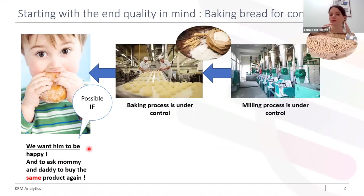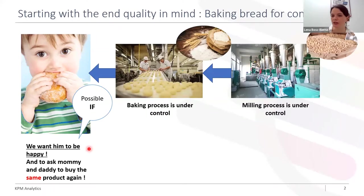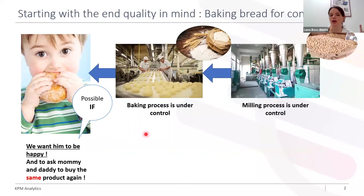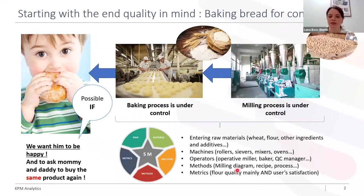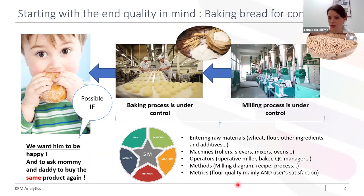The baking process must be under control. And to have the baking process under control, the flour must be compliant with the baking process. That means the milling process must be under control to provide this flour, and the milling process also requires wheat that corresponds to its specifications. Everything that impacts the quality of flour and dough must be under control — including the raw material, the machines, the operators, the methods, and the metrics.